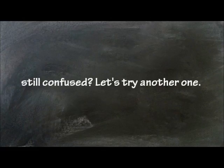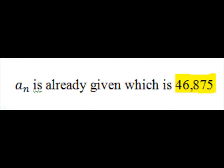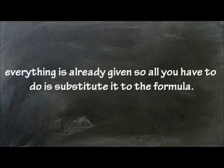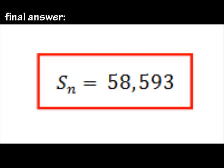Still confused? Let's try another one. Find the sum of a geometric series whose first term is 3 and whose last term is 46,875 with a common ratio of 5. As you can see, a sub n is already given, so we use the formula S sub n equals a sub 1 minus a sub n times r, all over 1 minus r, where r is not equal to 1. You don't need n for this example — everything is already given, so all you have to do is substitute. S sub n equals 3 minus 46,875 times 5, all over 1 minus 5. We get S sub n equals 58,593.